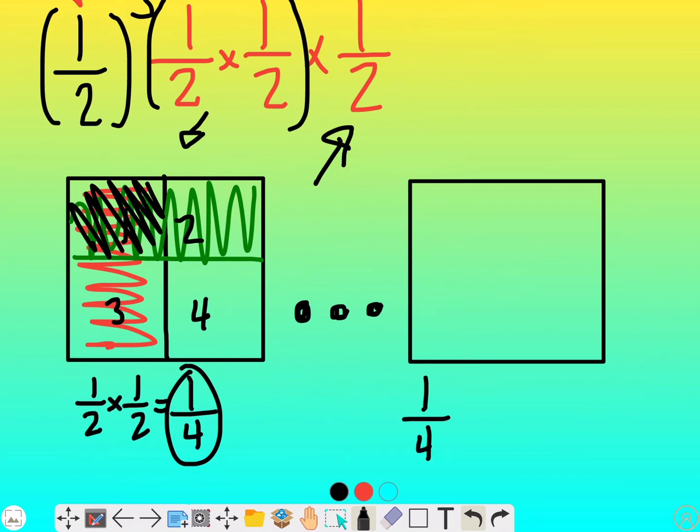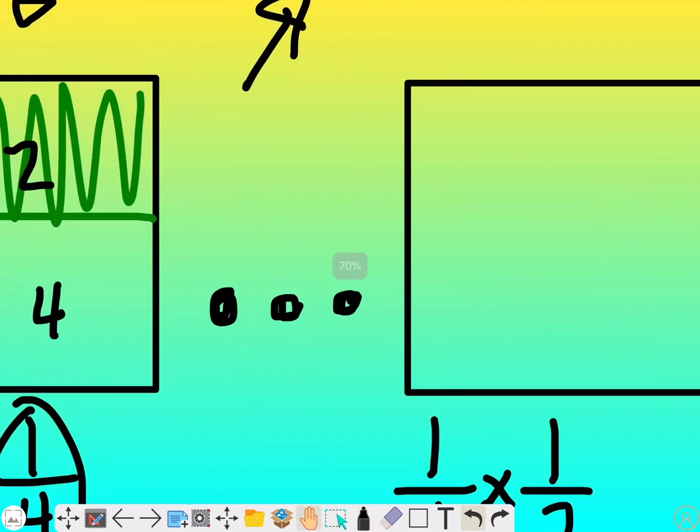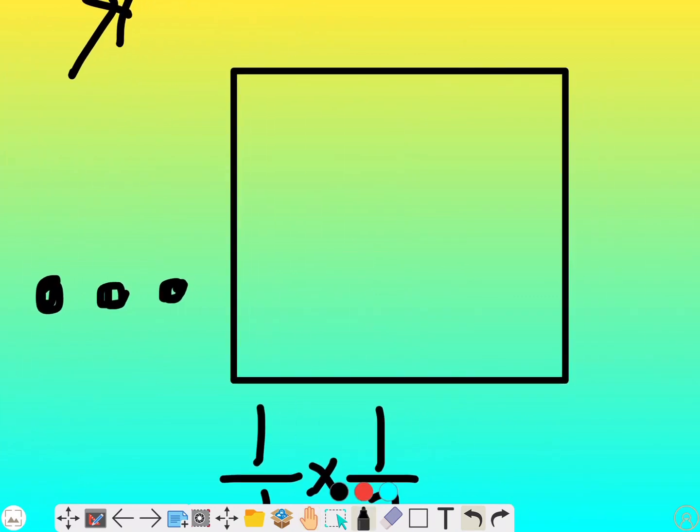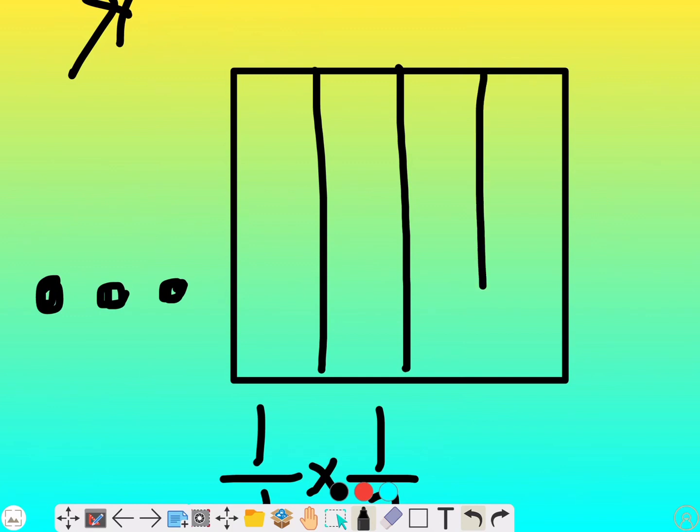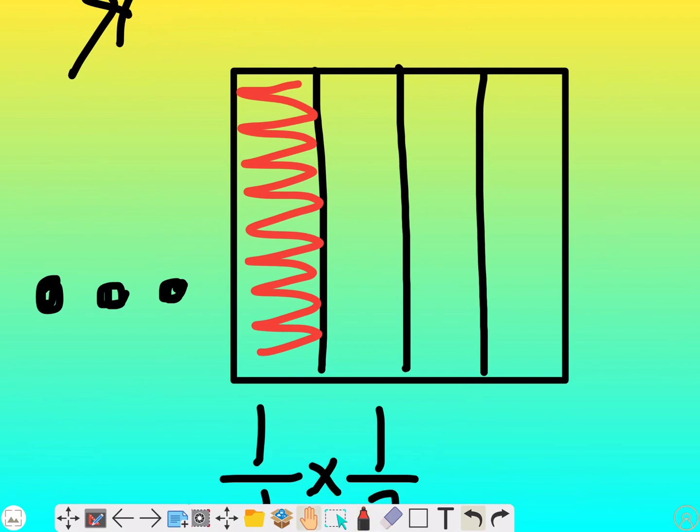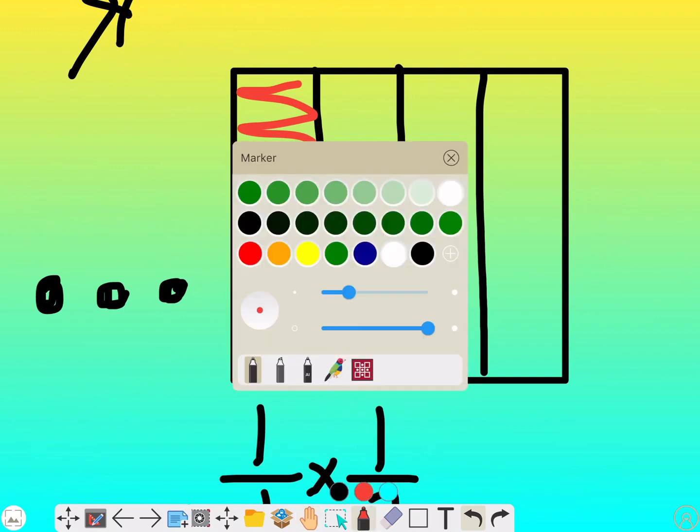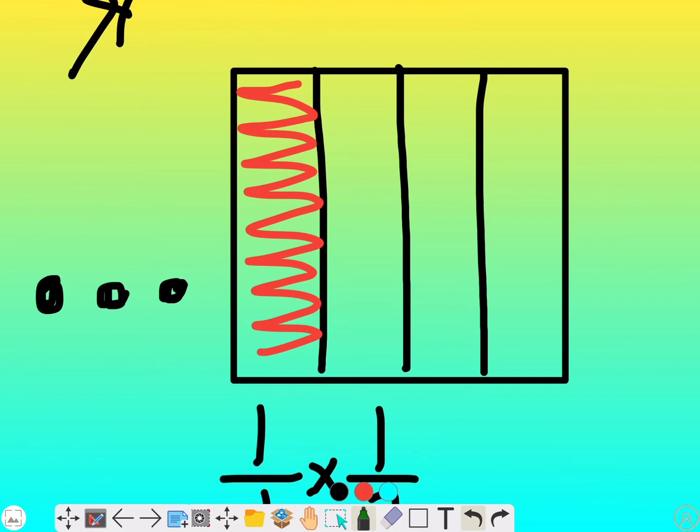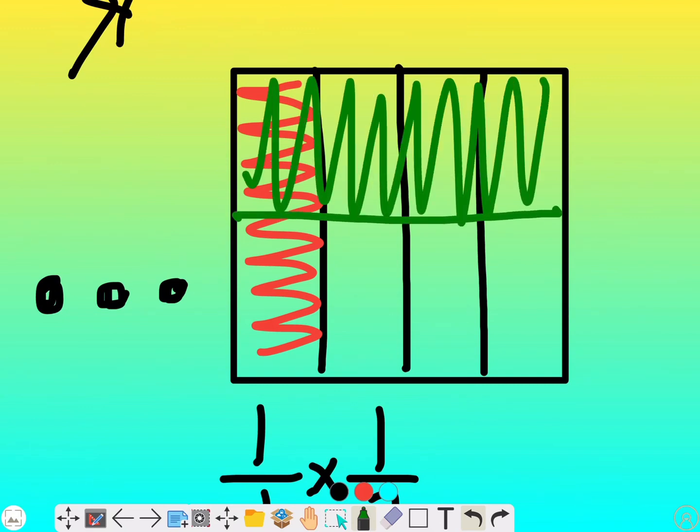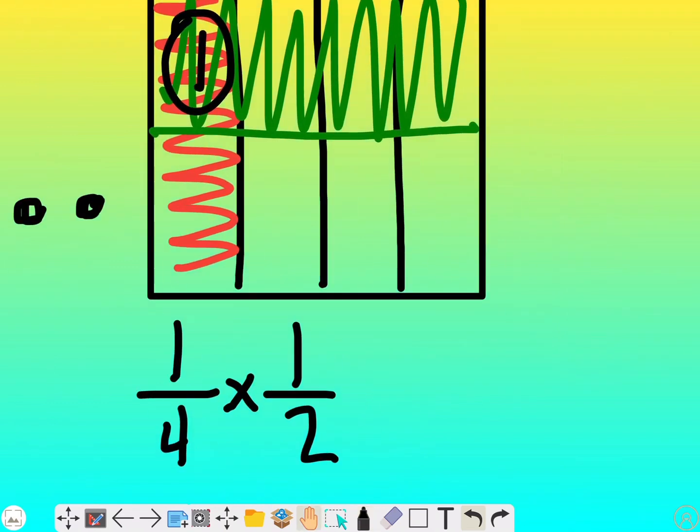Now I'm going to do the problem over here. What is one fourth of one half? I'm going to break apart my fraction vertically into fourths. I'm going to shade in one of them. And then what the problem is saying, I have one fourth of one half. So I'm going to take half of the fourth that's left over.